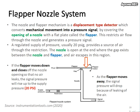This slide shows the flapper nozzle system. Here we can see the diagram of a simple flapper nozzle system. Here we have supply pressure, typically 20 psig.